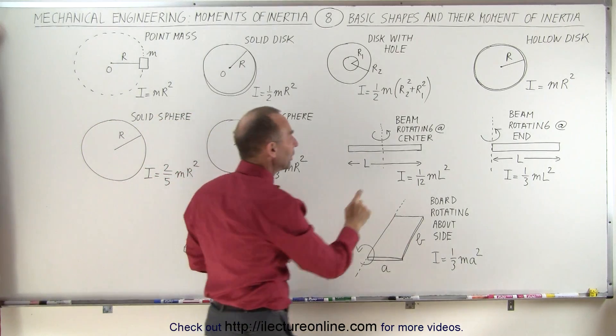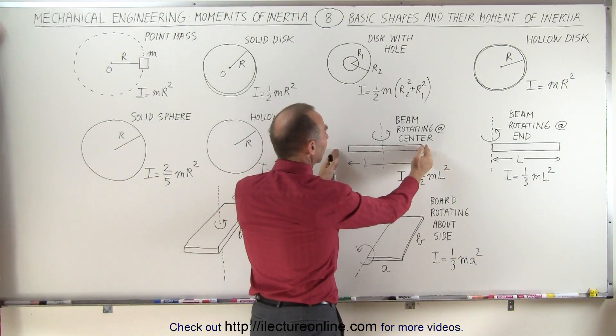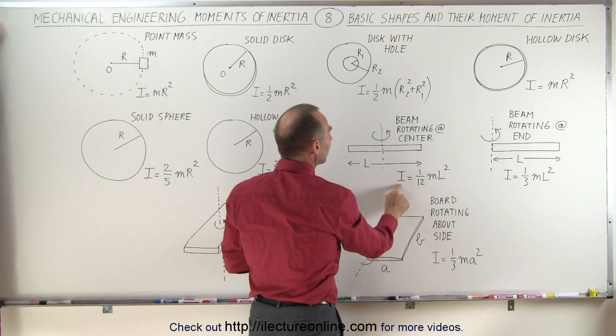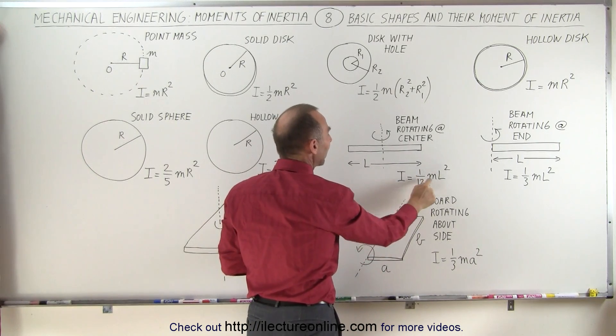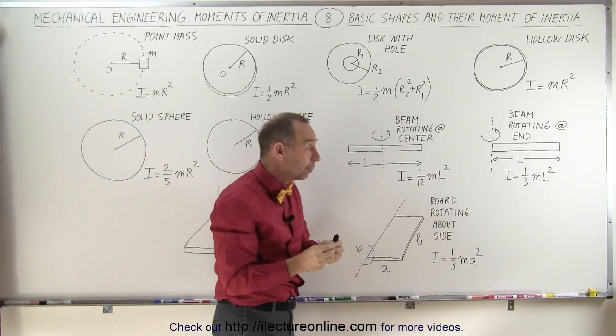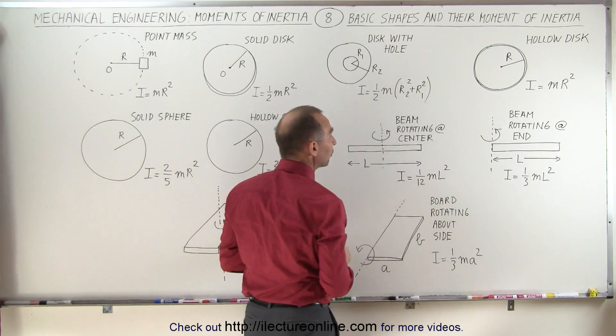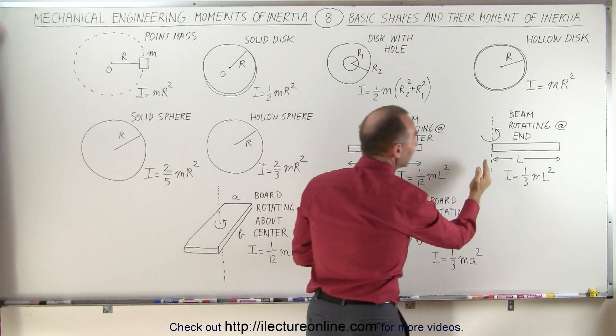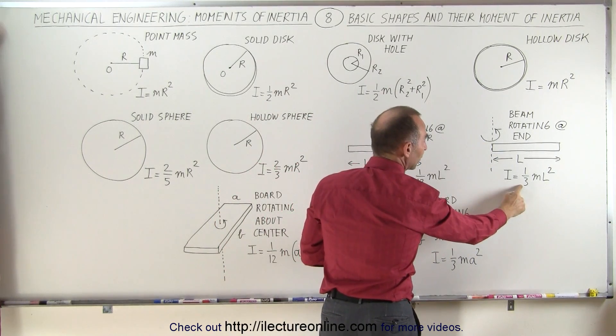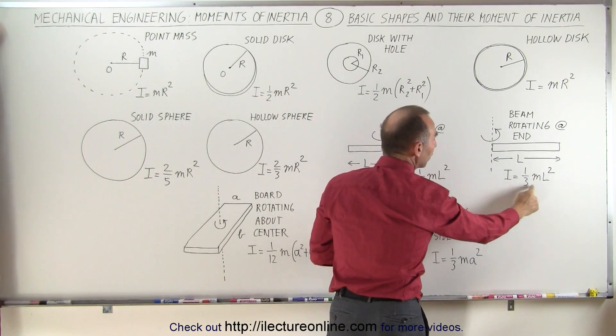Here we have a beam rotating at its center. Taking the length of the beam as L, the moment of inertia is 1/12 mL squared. This is a small number because more mass is concentrated close to the center of rotation. If the beam rotates at its end, the coefficient becomes larger: I equals 1/3 mL squared.